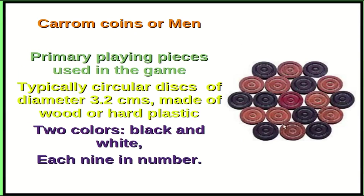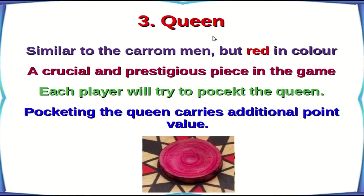The carom men are the primary playing pieces used in the game. They are circular discs of diameter 3.2 cm, made of wood or hard plastic, in two colors — black and white — with 9 of each. The special piece, the Queen, is similar to the carom men but red in color. It is a crucial and prestigious piece in the game, and each player will try to pocket the Queen as pocketing it carries additional point value.